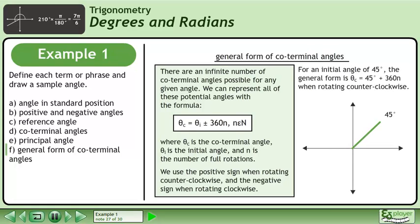For an initial angle of 45 degrees, the general form is θc equals 45 degrees plus 360n when rotating counter-clockwise. The animation shows the first four positive coterminal angles.